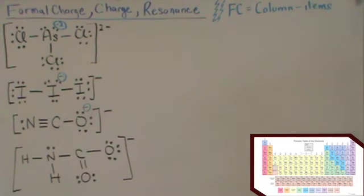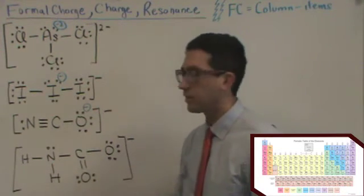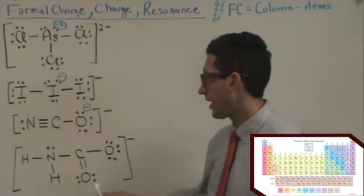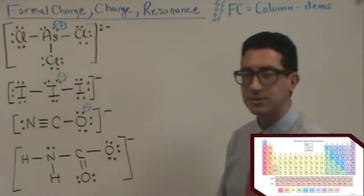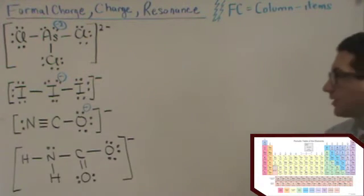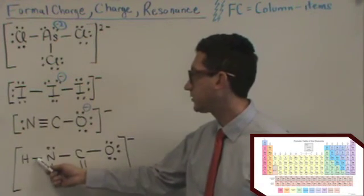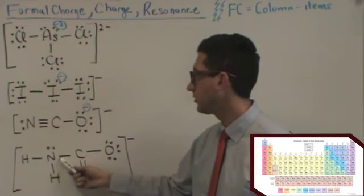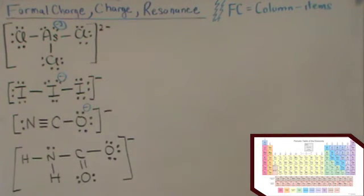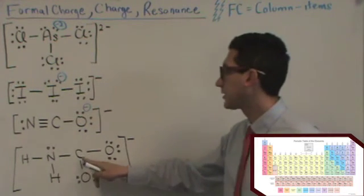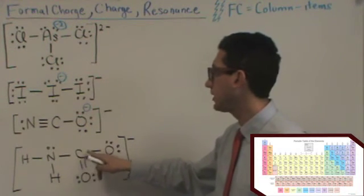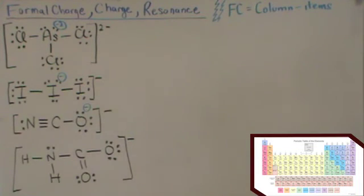Now, let's do the last one. Hydrogen's in column 1, and there's one item around it. So, it has a formal charge of 0. That's true for both hydrogens. The nitrogen's in column 5, and there's 1, 2, 3, 4, 5 items around it. So, 5 minus 5, that'll be 0. Carbon's in column 4, and there's 1, 2, 3, 4 items around it. So, the items match the column. That's 0.